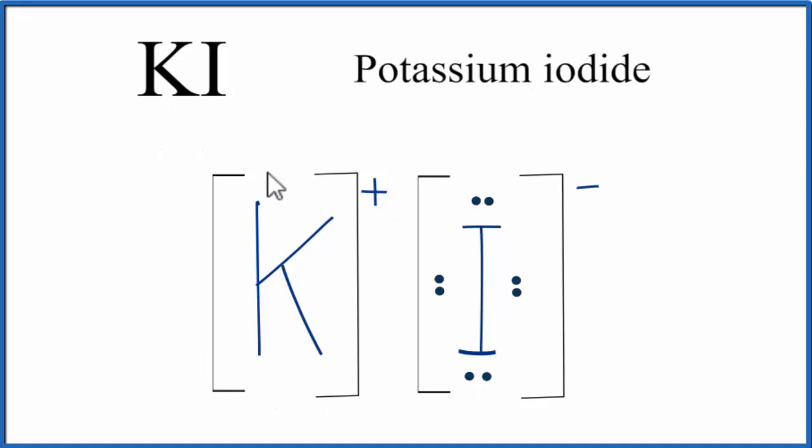Note that this is what we call a formula unit. When we have ionic compounds, they come in crystals and they're made up of a bunch of these formula units in a regularly repeating pattern.